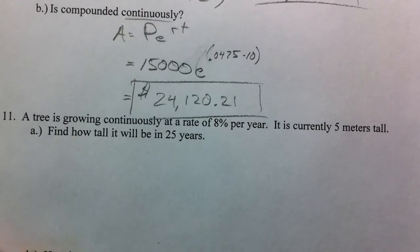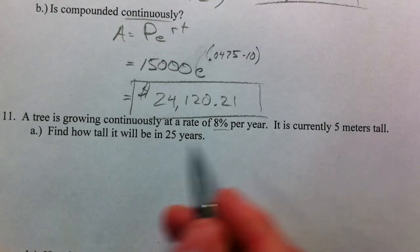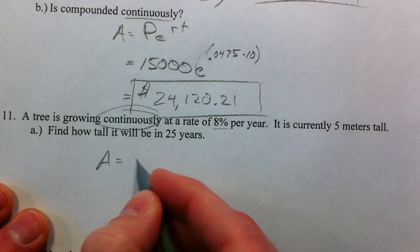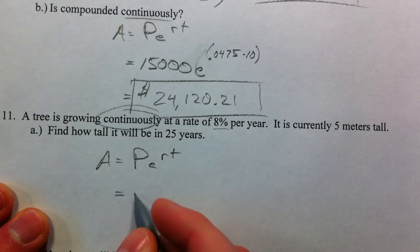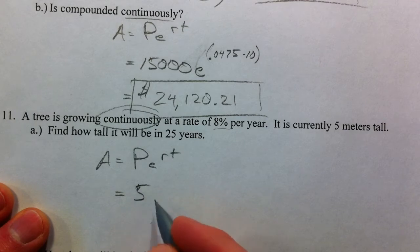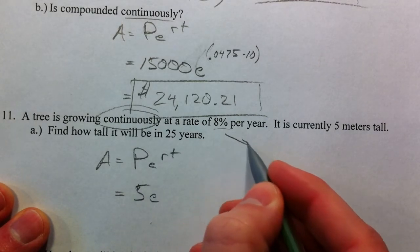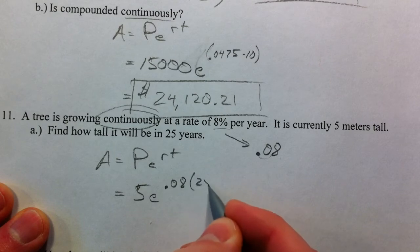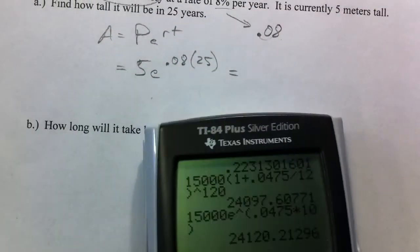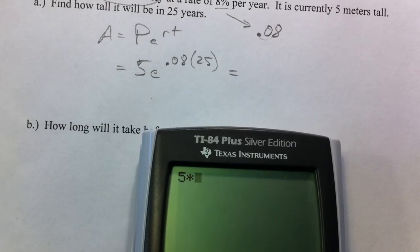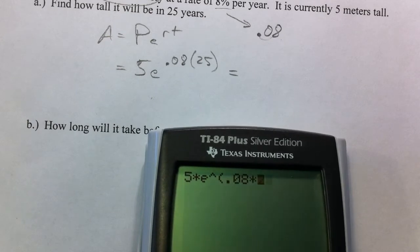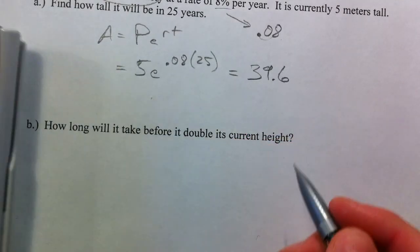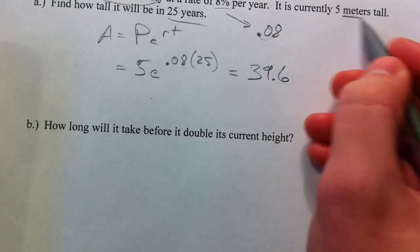A tree is growing continuously at a rate of 8% per year, and is currently 5 meters tall. Find how tall it will be in 25 years. The word 'continuously' is very important because it tells you we're going to use our PERT equation. Currently it's 5 meters tall — that's the initial value — times E. 8% turns into 0.08, times 25 years. So 5 times E raised to 0.08 times 25 gives us 36.9 meters tall.